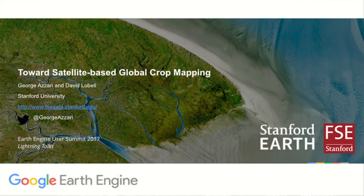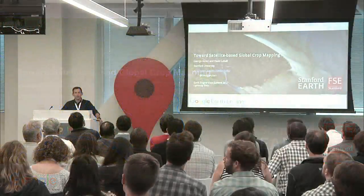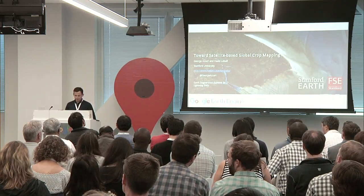Hello everybody. I'm George Azari and I work with David Lobel at Stanford University. Our research basically revolves around the general idea of monitoring different aspects of food security using satellite images, particularly right now we're focusing on mapping crop yield and crop type at the pixel level, with the idealistic goal of being able to map individual fields globally and annually.